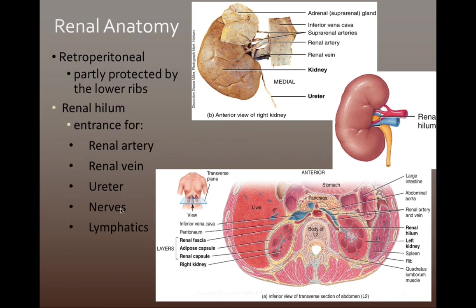The kidneys are referred to as retroperitoneal. Peritoneal refers to the peritoneum, and retro means behind — the kidneys sit behind the peritoneum and are not wrapped in this serous membrane. You can see an inferior view of a transverse plane of the abdomen. On top of each kidney we find the adrenal or suprarenal gland, which contains the cortex with the zona glomerulosa, zona fasciculata, and zona reticularis, as well as the medulla that releases catecholamines. This structure belongs to the endocrine system.